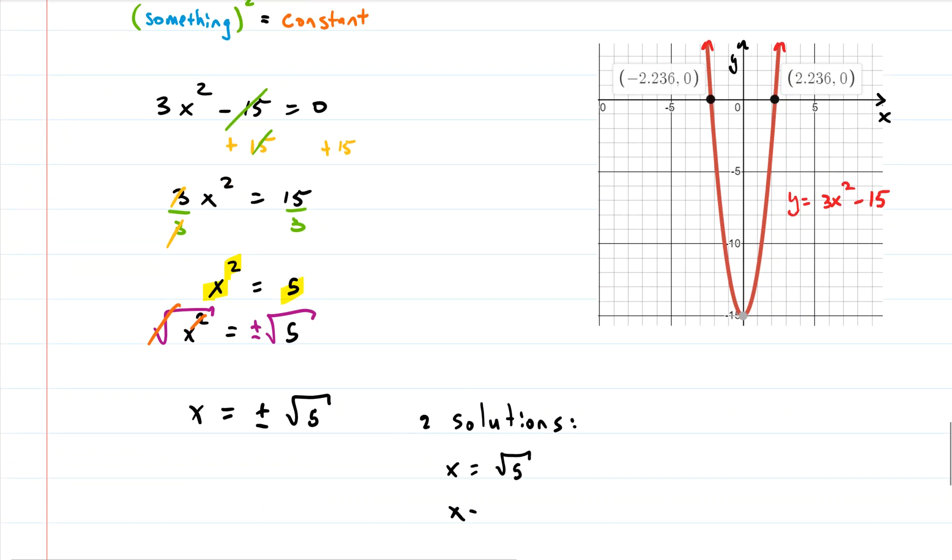We have x equals root 5, the positive one, and we have x equals the negative one.